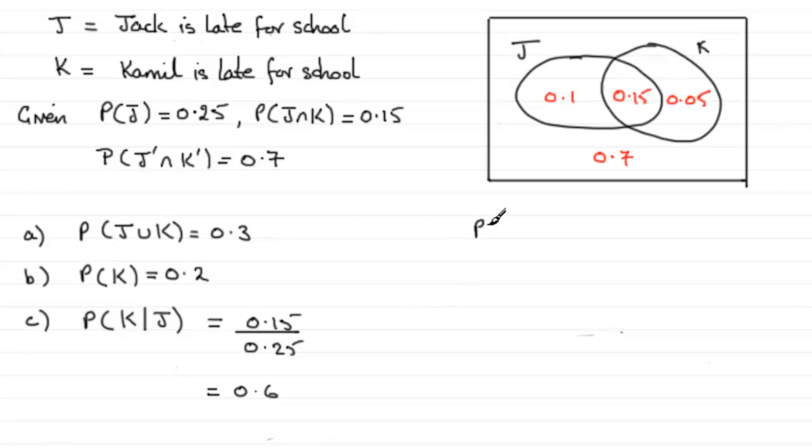You should be aware that the probability of some event A given B, this is documented in your book of tables normally. The probability of A given B is the probability that both events happen, that's A and B, divided by the probability of the given event, which in this case would be B.